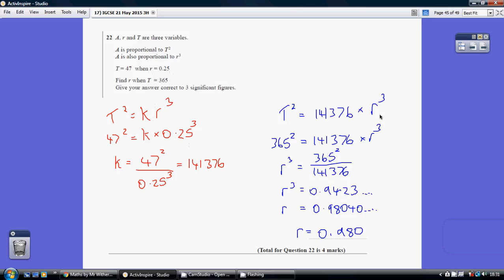So using that revised formula, when T is 365, it allows me to work out that R cubed is this, so R is 0.98040 dot dot dot. So to three sig figs, that's 0.980.